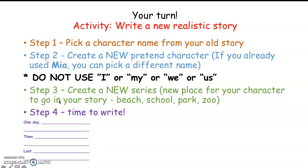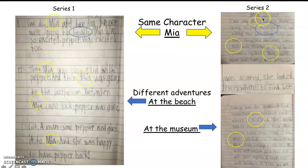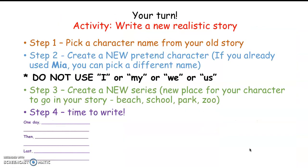Step three, you're going to create a new series adventure for your character to go on — they can go to the beach, the school, the park, or the zoo. Step four, when you have your new character and adventure, you can start to write. Remember, your writing should have a beginning, a middle, and an end. You want a problem and you want a solution. Remember, we want new character names and new adventures to go on. Okay, go ahead!